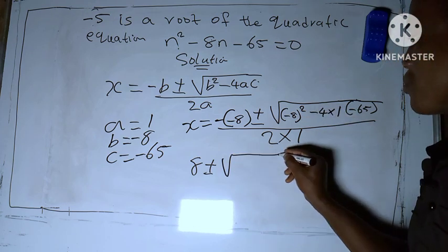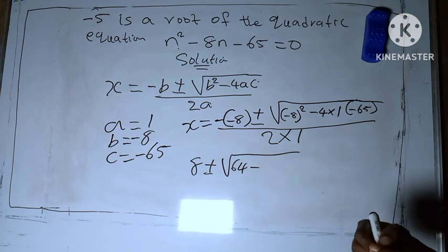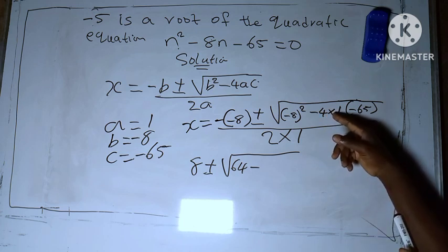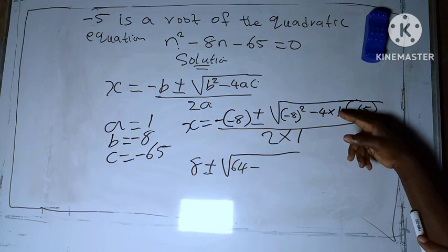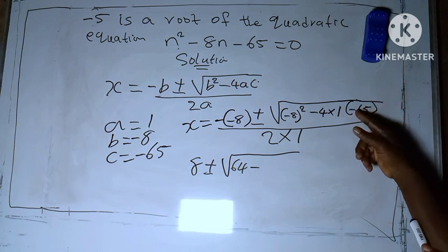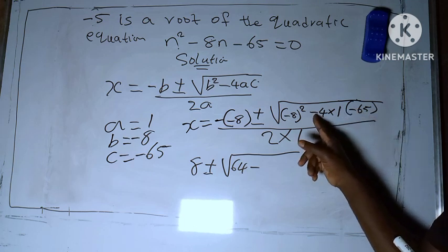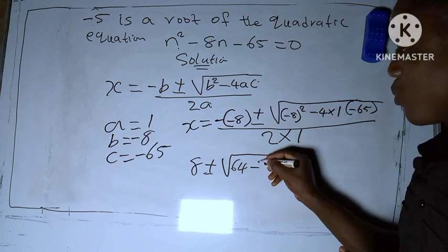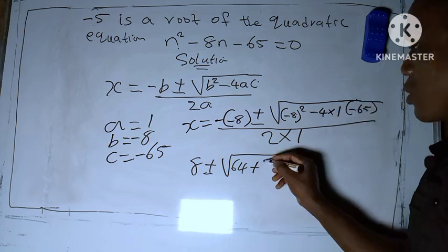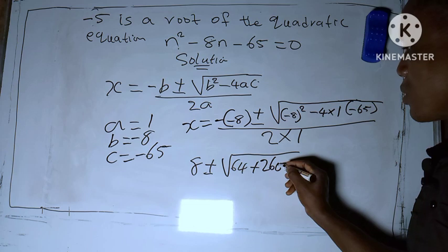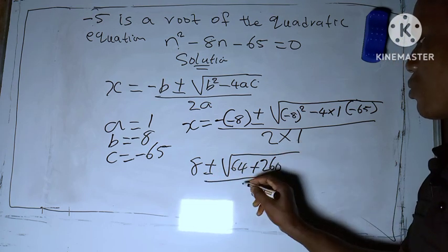To give us 64. Minus four multiply by one is four, then four multiply by 65. Here we have a minus sign, so if we open the bracket, this minus we multiply gives us plus. So 4 multiply by 65 to give us 260, all over 2 times 1, which is 2.